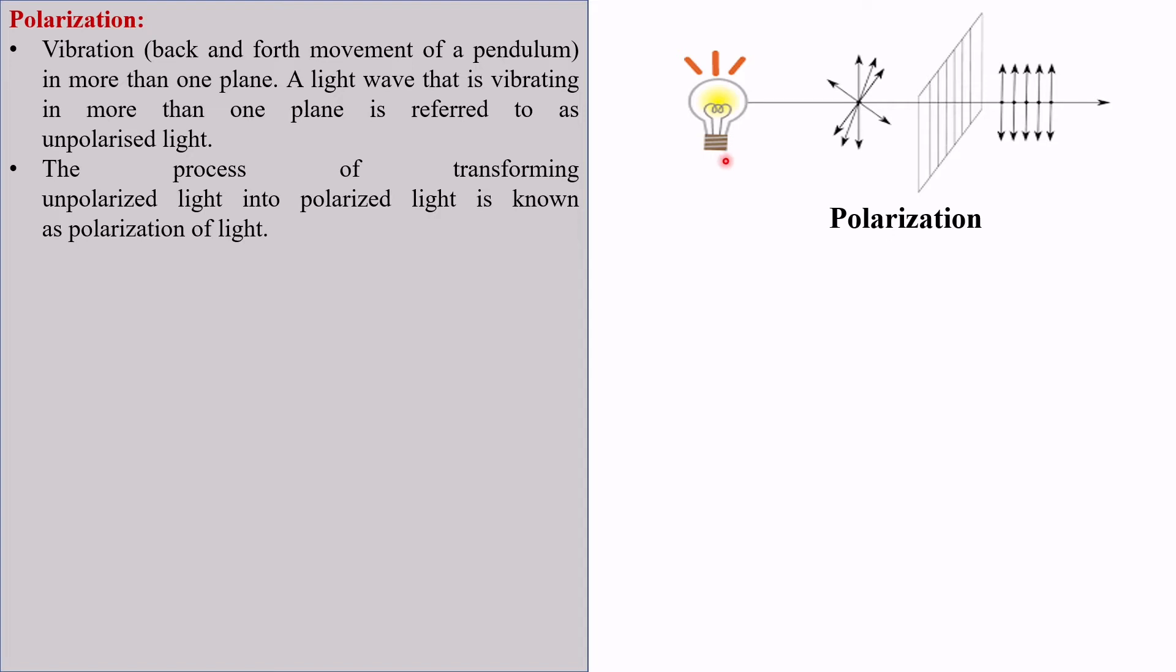Suppose this is the light source. Now, light waves are vibrating in different planes. Hence, they are unpolarized light. Now, a polarizer is placed here. A polarizer is placed here, and now all light waves are vibrating in a single plane. So all light waves are now vibrating in a single plane and became polarized.